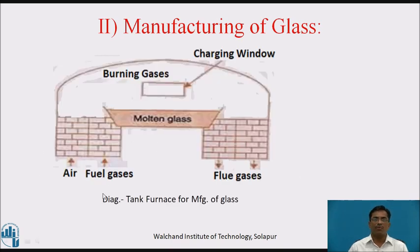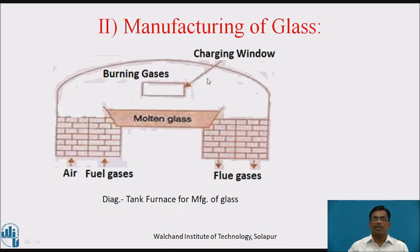This is a diagram for manufacturing of glass showing a tank furnace. This consists of a tank where the raw material is melted. There is an inlet for air and fuel gases are also introduced from this inlet. The burning of gases causes the mass to melt, and the fuel gases produced are taken out from the outlet.